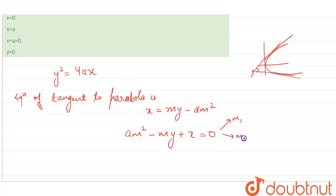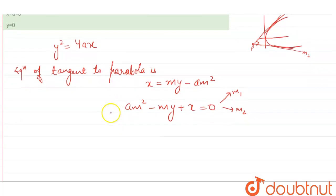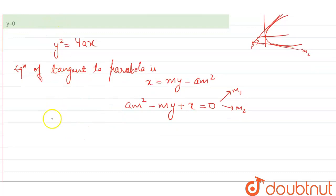so it has two roots m1 and m2, that means two slopes of tangents m1 and m2. From sum of roots, m1 plus m2 equals y over a,